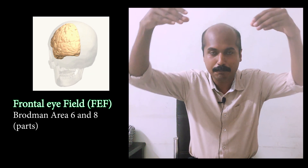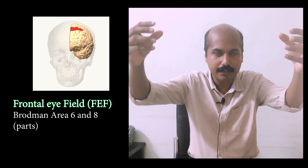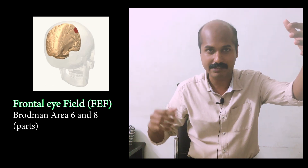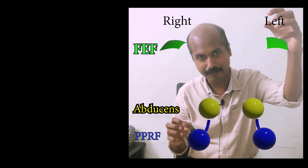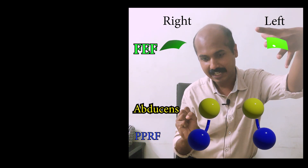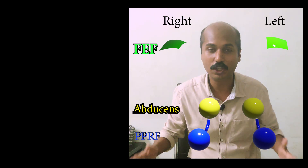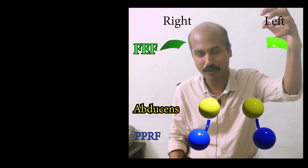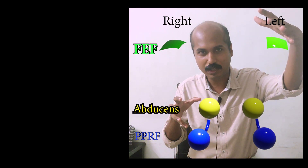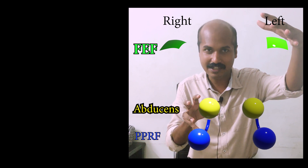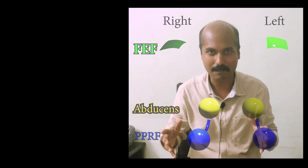The PPRF receives its influences from higher gaze centers, particularly the frontal eye fields, which are clinically important. The frontal eye fields are located in the frontal cortices, anterior to the pre-central gyrus — Brodmann area 6 and part of area 8. The left frontal eye field stimulates the right PPRF, which in turn stimulates the right abducens nerve nucleus. So the chain is: frontal eye field → PPRF → abducens nerve nucleus → gaze to the right side.